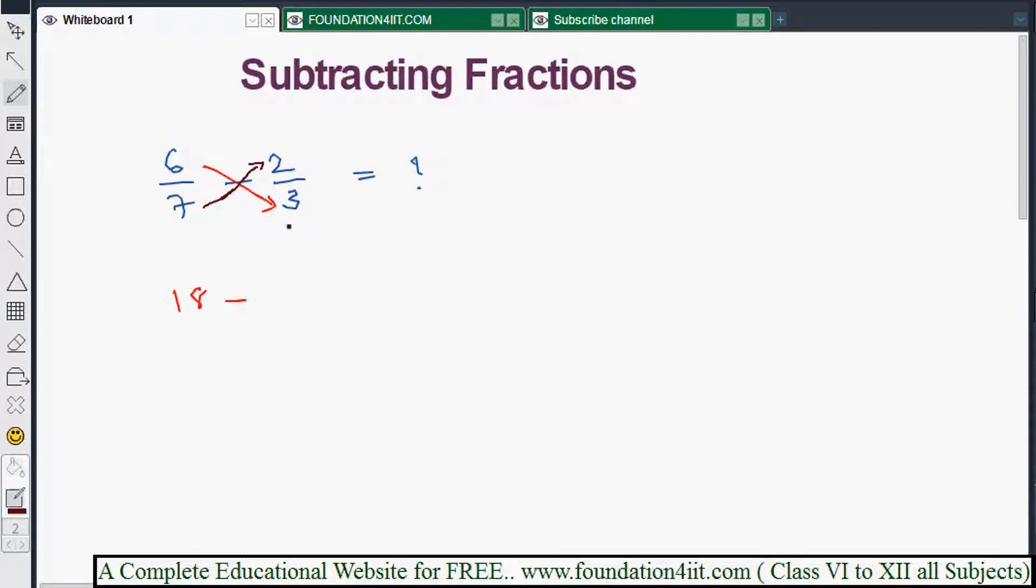Now the numerator part is over. For denominator, we just multiply both denominators: 7 into 3 is 21. Adding fractions means you'll add both, but subtracting means you'll subtract. 18 minus 14 is 4/21. That's it, 4/21 is the answer. If cancellation is possible you can cancel it, otherwise leave as is.